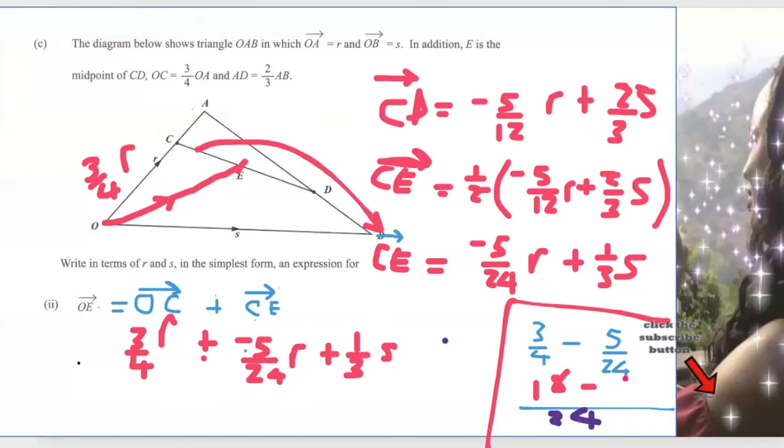18 minus 5, that's 13 over 24. So it means three-quarter R minus 5 over 24 is 13 over 24 R plus one-third S. And that's it. This is the answer for OE.